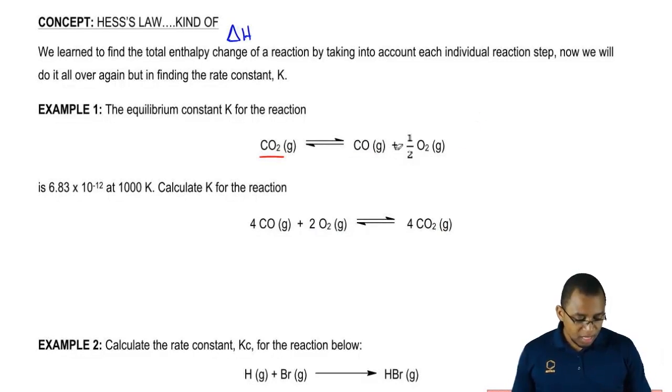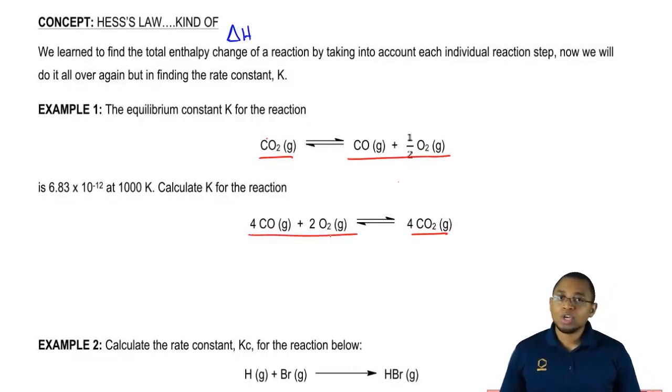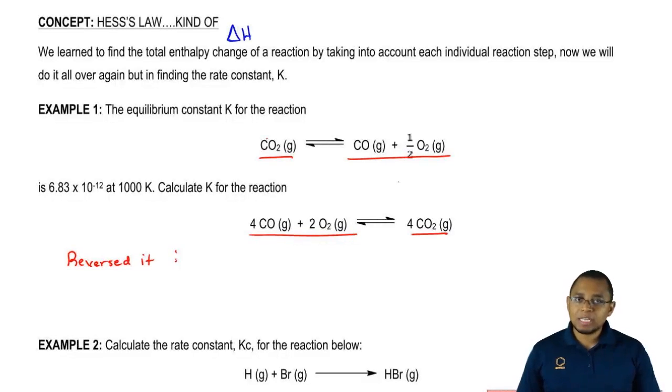We're going to say first CO2 was a reactant, but now it's a product. These guys were products, now they're reactants, so it looks like I reversed the reaction. Just realize, when I reverse a reaction, K becomes the reciprocal. K was 6.83 times 10 to the negative 12. Now it becomes 1 over 6.83 times 10 to the negative 12. It becomes the reciprocal of whatever it was. That's one change that I did.